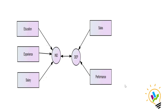In this case, the independent variable set has three variables and the dependent set has two variables. The dependent variable set has the least number of variables, so the system will create two canonical correlations between the independent and dependent canonical variables.